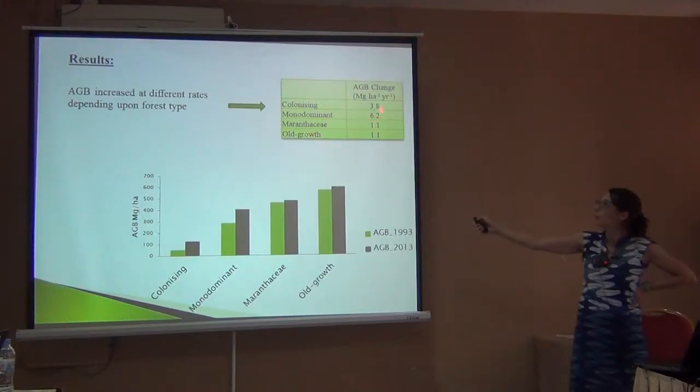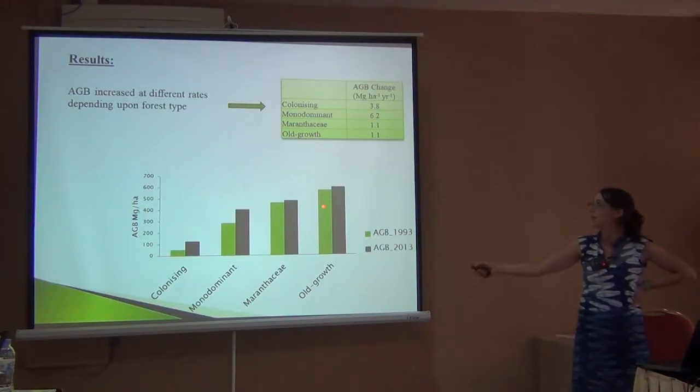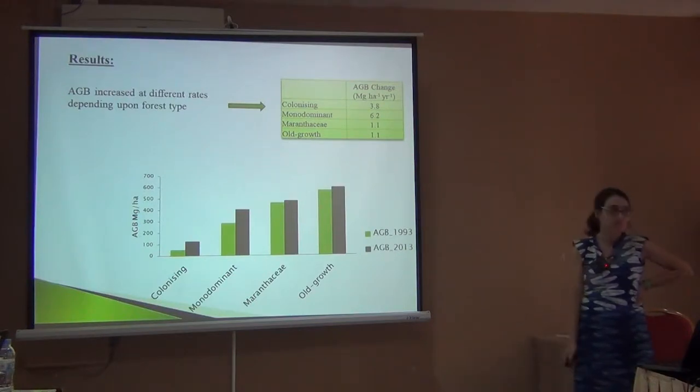The middle ones quite a lot, 6.2 — they grow very fast, this monodemonium tree, and they all grow less.